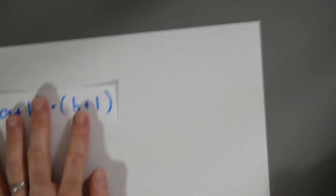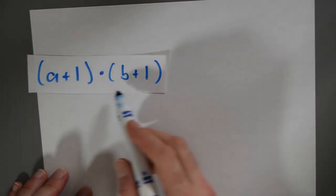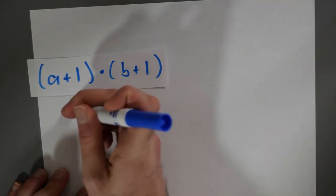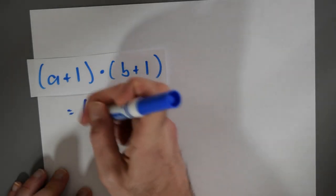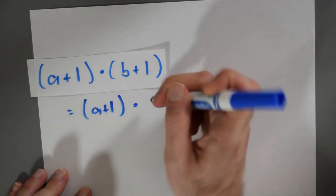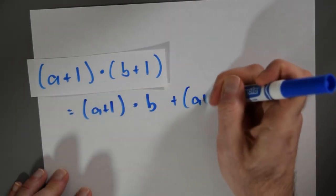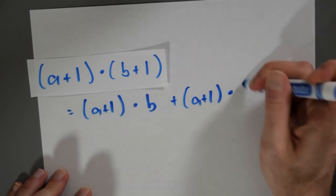So I've got (a+1)·(b+1), and I'm going to think of this multiplication as distributing over this addition. So I get (a+1)·b + (a+1)·1. Now I've got another opportunity to use distributivity.